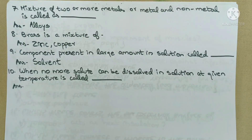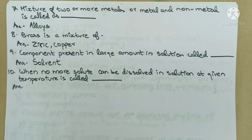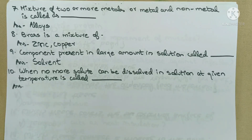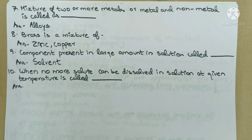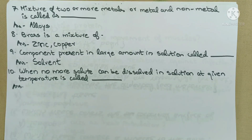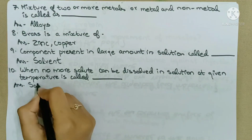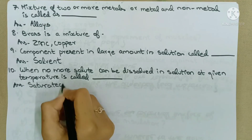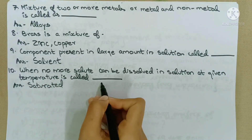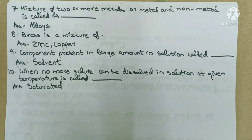Next question: When no more solute can be dissolved in a solution at a given temperature, what is it called? If we dissolve solute into a solution and we can't dissolve any more, we call it a saturated solution. A saturated solution has the maximum amount of solute dissolved — if we add more solute, it cannot dissolve. It is called a saturated solution.